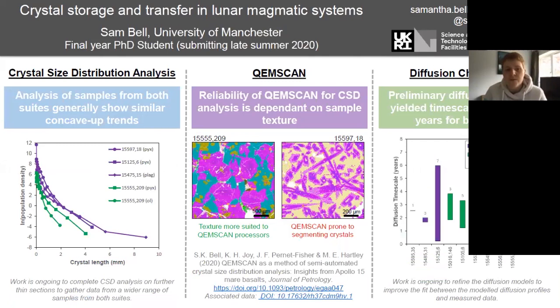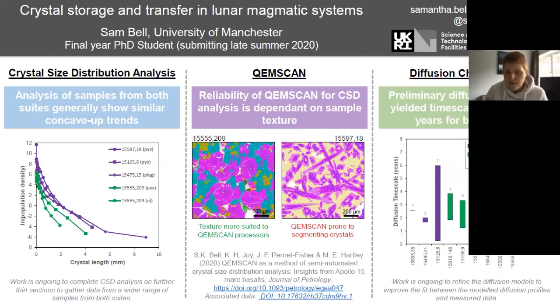In terms of crystal size distribution analysis, we've done it on several samples and still have a few more to go to get a full picture. Generally, we found that both suites are showing similar concave upward trends. In terms of chem scan, our paper went up on Journal of Petrology over the weekend. One of our main findings was that chem scan's reliability really depends on the texture of the sample, but it was a great chance to explore the methods behind this process.